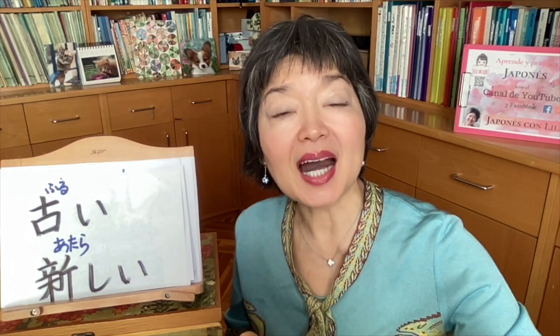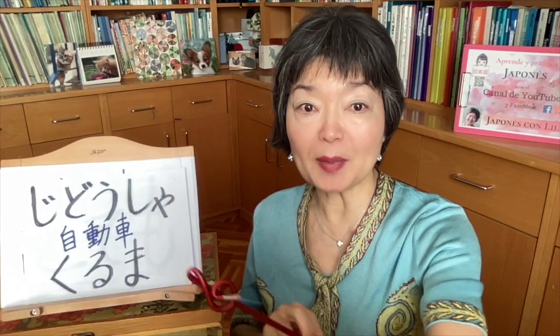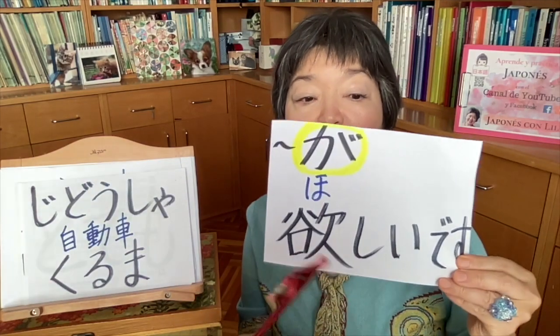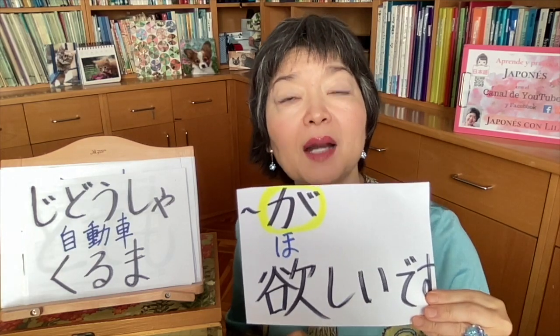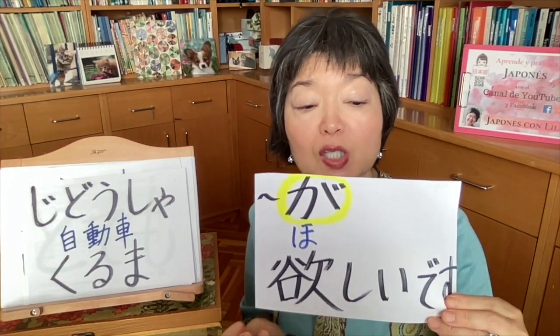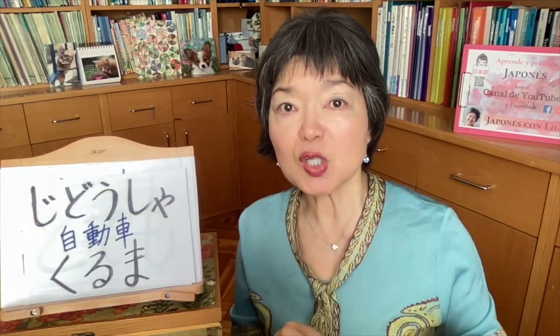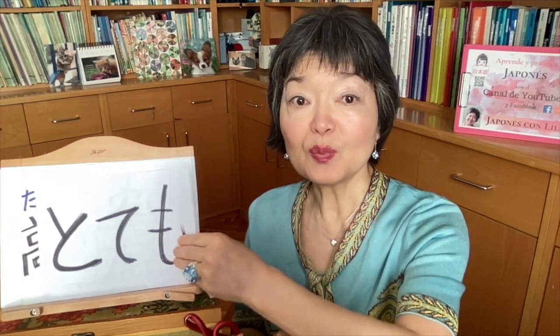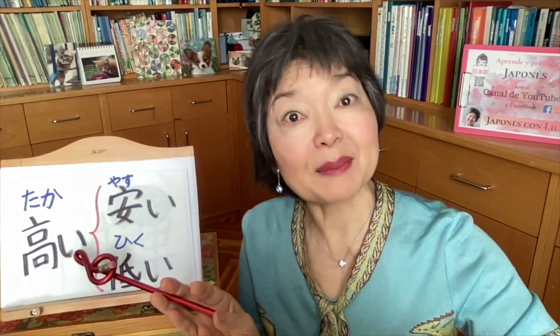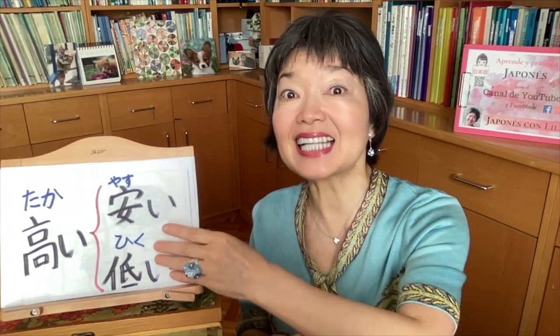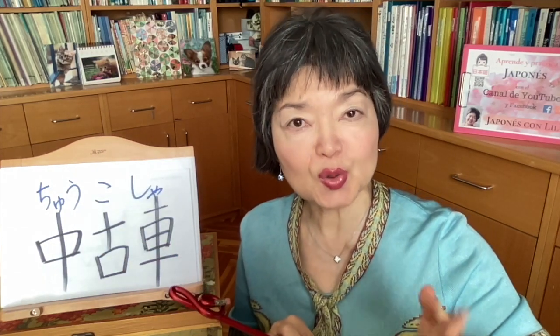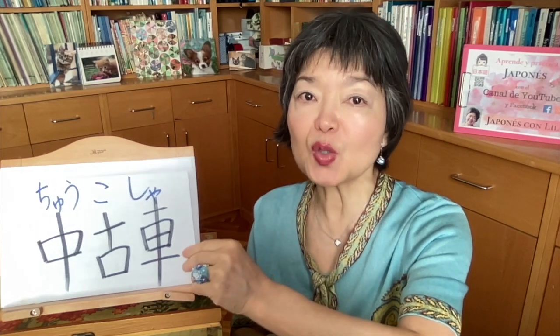Now let's translate the full sentence: 私は 新しい車 が ほしかった ですが (watashi wa atarashii kuruma ga hoshikatta desu ga) — 'I wanted a new car, but...' とても 高かった ですから (totemo takakatta desu kara) — 'because it was very expensive...' 中古車 を 買いました (chukousha wo kaimashita) — 'I bought a second-hand car.' 買います (kaimasu) = to buy; 買いました = past tense.